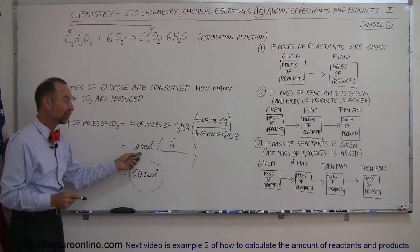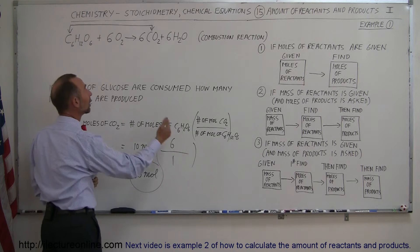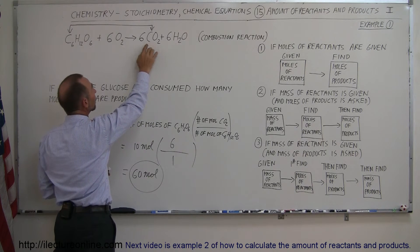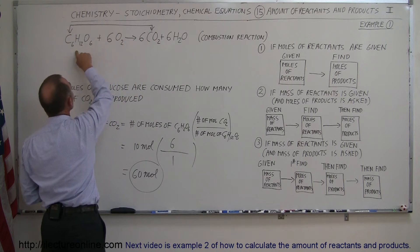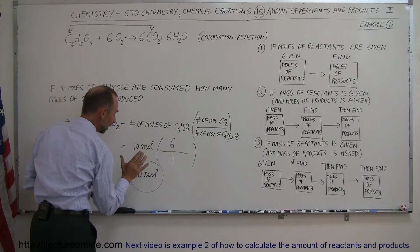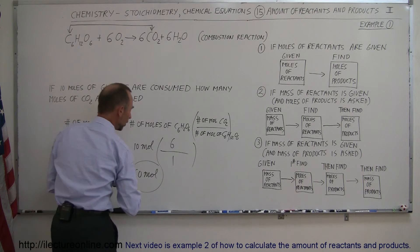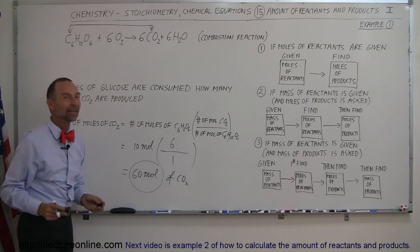Just put in the number of moles that was given from the reactant and then put in the ratio of how many more or less moles we're going to end up with in the product. In this case it's a 6 to 1 ratio. Six moles of carbon dioxide for every one mole of glucose. So 6 to 1 ratio times the number of moles we started with. So we end up with 60 moles of carbon dioxide. That's how you do that.